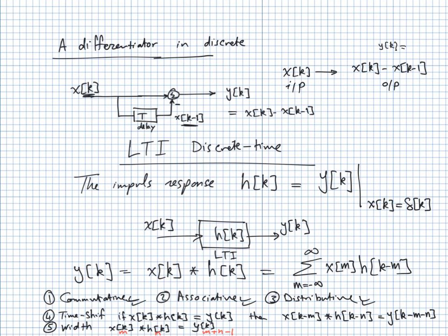These are the properties of discrete convolution. Next time we will continue with other system properties and then begin discussing the interaction between discrete time systems and discrete time signals, particularly in the frequency domain.